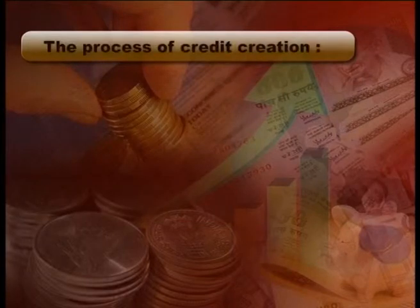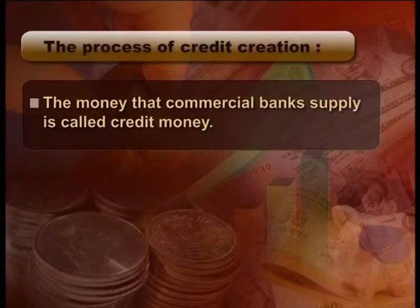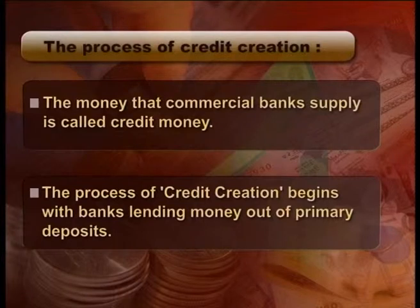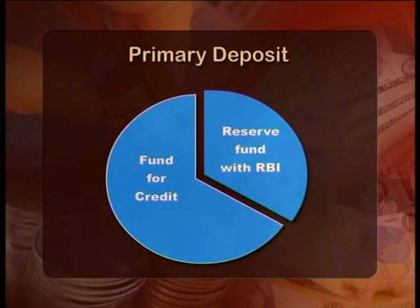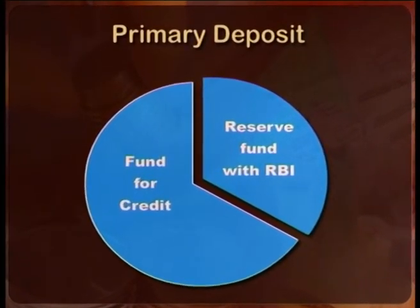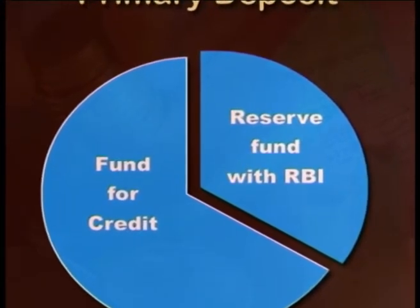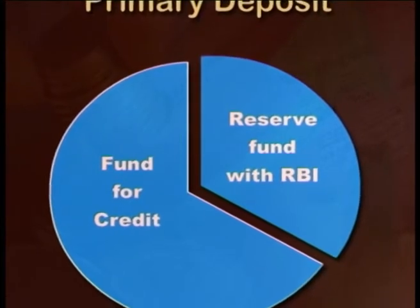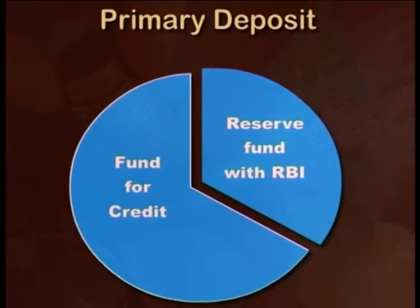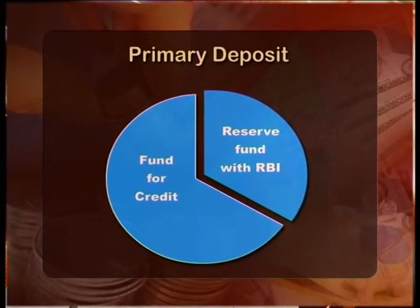The process of credit creation: Commercial banks are an important source of money supply. The money that commercial banks supply is called credit money. The process of credit creation begins with banks lending money out of primary deposits. Primary deposits are those deposits which are deposited in banks. Banks cannot lend the entire primary deposits as they are required to maintain a certain proportion of primary deposits in the form of reserves with the Reserve Bank of India. After maintaining the required reserves, the bank can lend the remaining portion of primary deposits, and the process of credit creation starts.